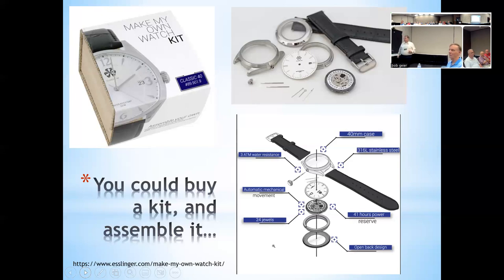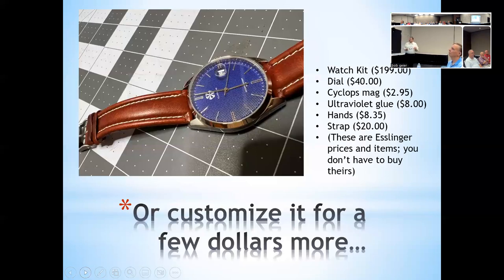I didn't like the hands. So I bought a new set of hands. I didn't like the strap. So I bought a different strap. And last but not least, I wanted to add just a little something. So I added a cyclops, a little magnifier over the calendar. Why? Because anybody seeing that cyclops, the first thing they go is, is that a Rolex? And no, it's not. It's a $200 kit that I put together. But it gets a little bit of attention.